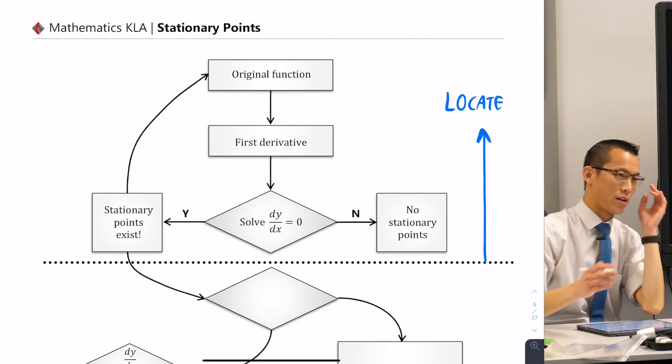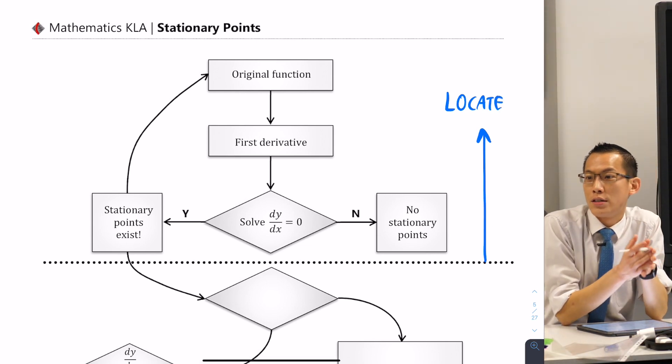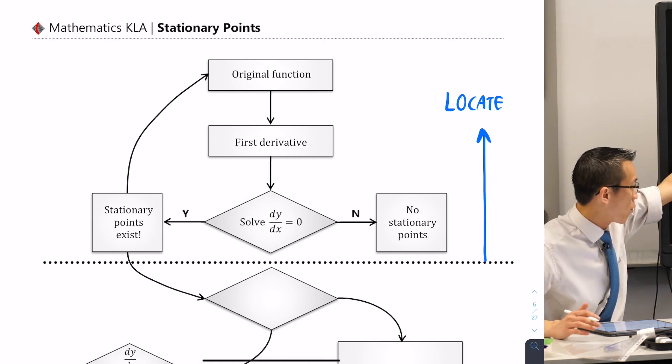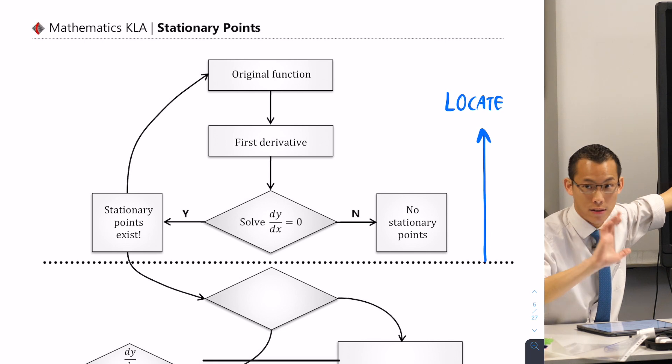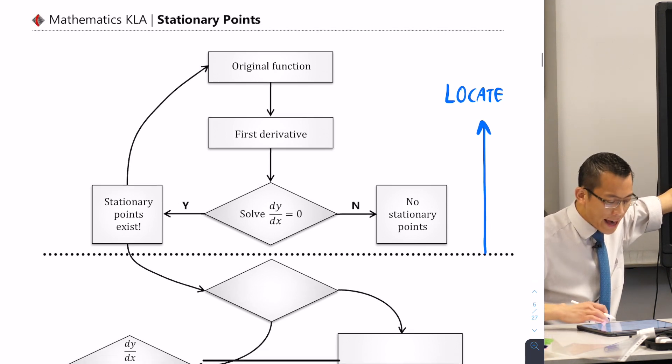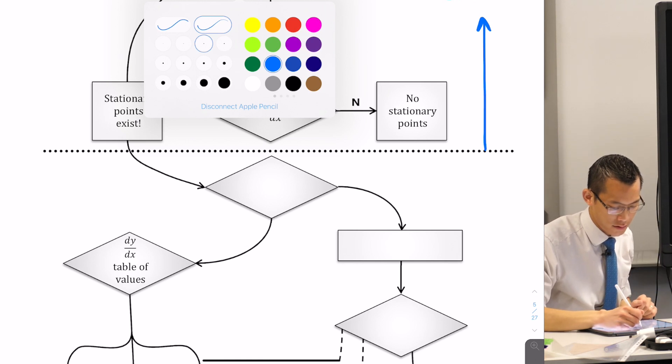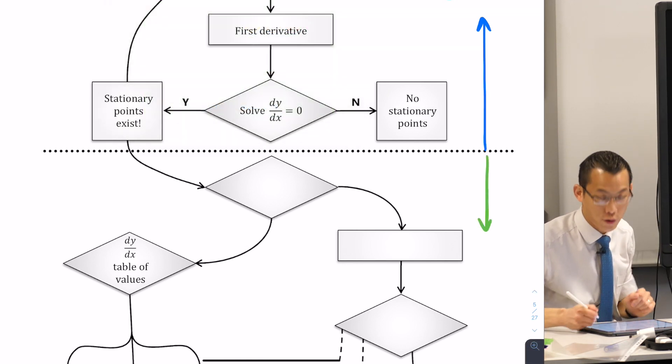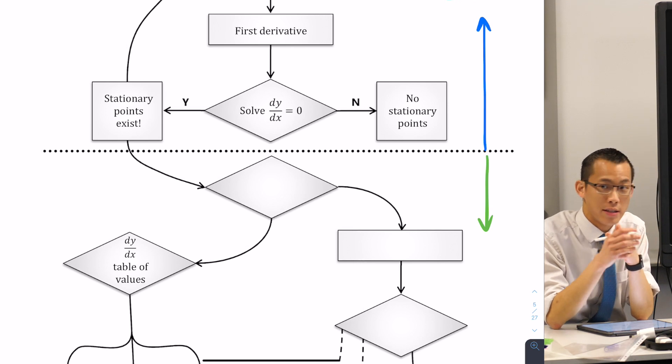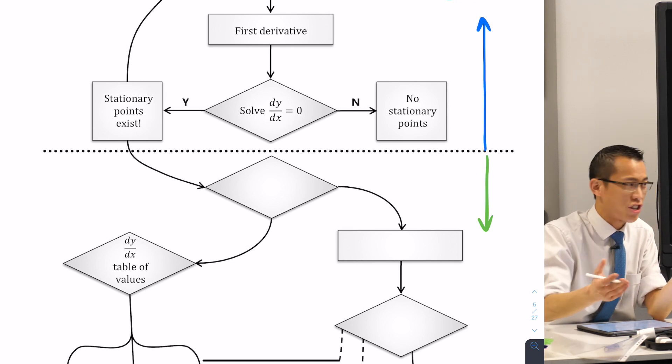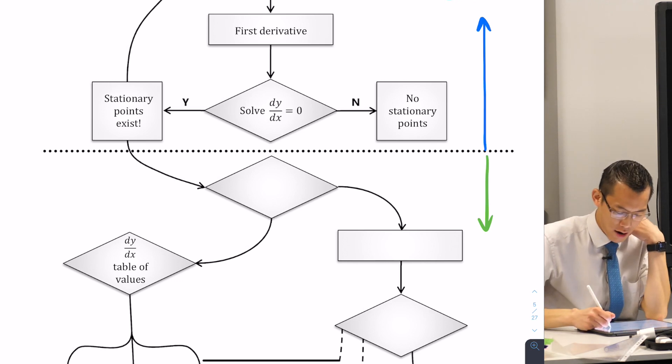To locate a stationary point, we're looking for where the first derivative is equal to zero. So that top part there, we knew completely how to do that last week. But then after that, when we looked at the second half of this, the second half of course was not about locating the stationary points. It's about once you've located them, can you determine their nature? Tell me what kind of stationary points they are. Determine nature.